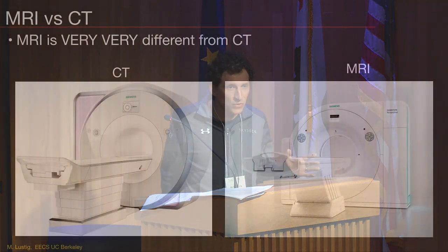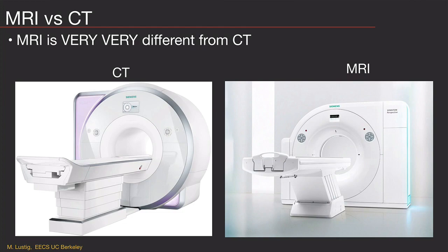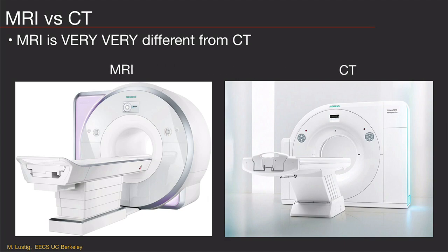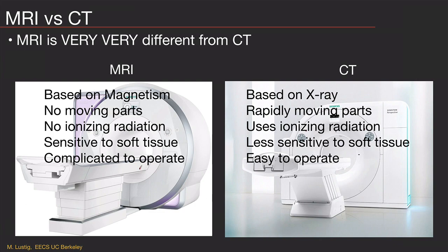MRI is very often confused with CT. Probably some of you have gone through MRI, some of you have had CT. But even as a technologist from Silicon Valley, you sometimes get confused because nobody has actually pointed this out. This is actually an MRI, and this is a CT. While they look similar, they're very different in the way they use physics. CT is x-ray based, has rapidly moving parts, uses ionizing radiation, and is less sensitive to soft tissue but super easy to operate. MRI is based on magnetic fields, no moving parts, no ionizing radiation, and is extremely sensitive to soft tissue and various forms of contrast — but super complicated to operate.